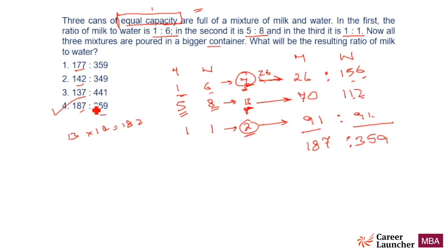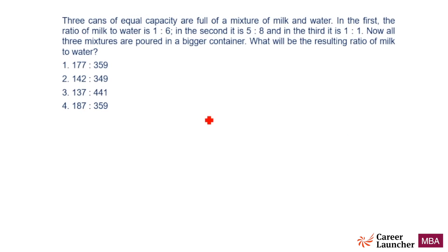So there is a mathematical approach of doing the question. But let me just stop here and go back to the question. We found that the equal capacity in each container we decided has to be 182 liters. So if you look at all the three containers, the total volume of milk and water is going to be 182 into 3, which is 546.